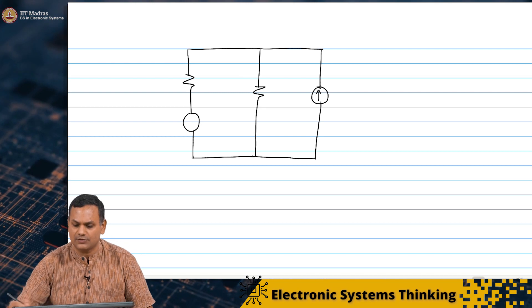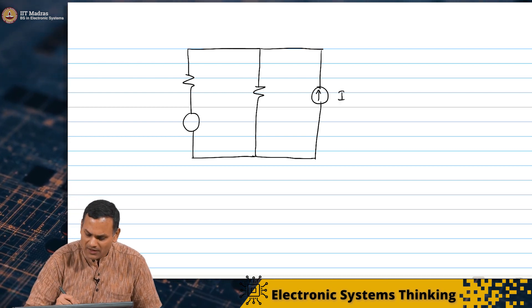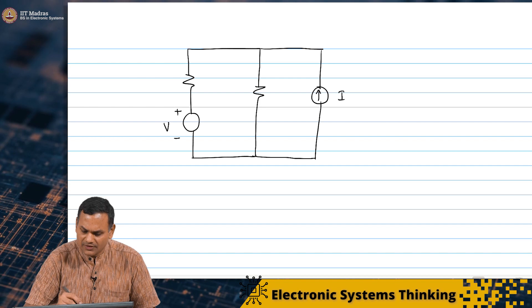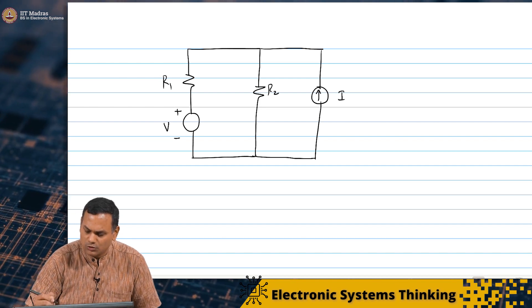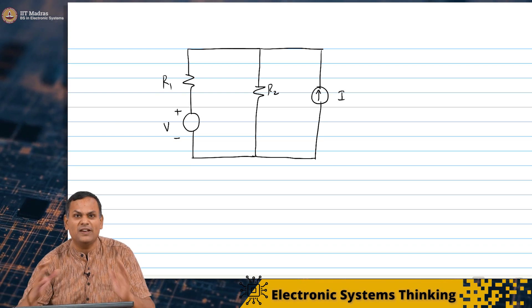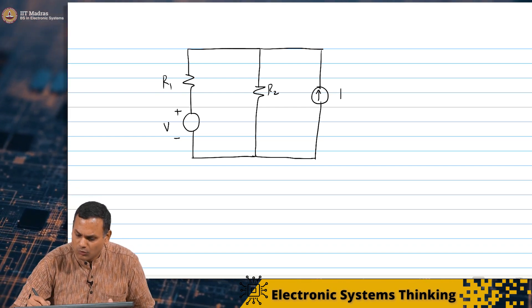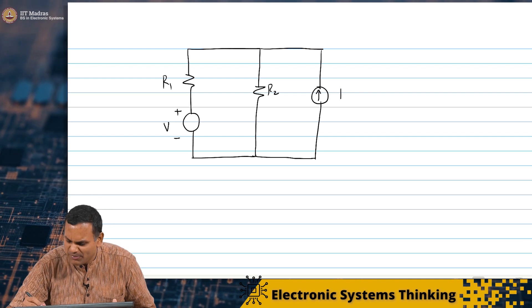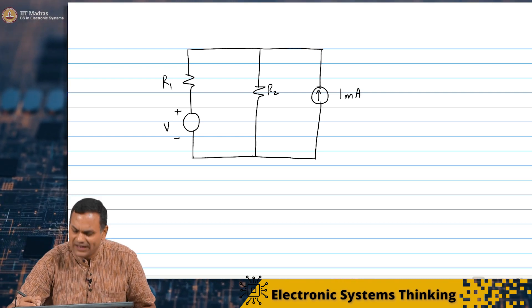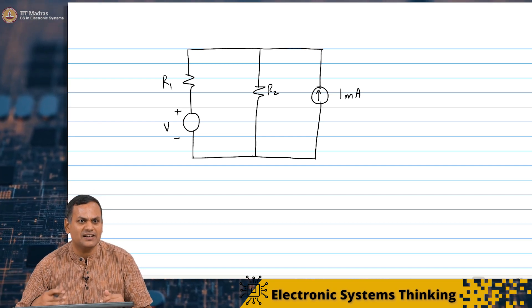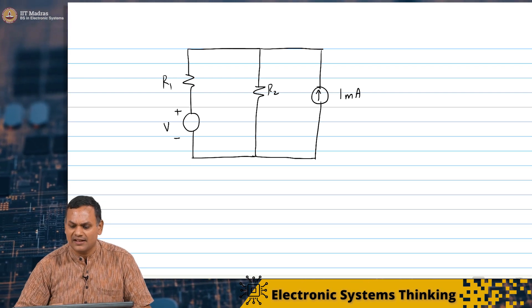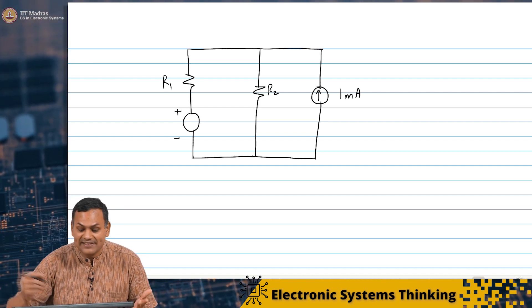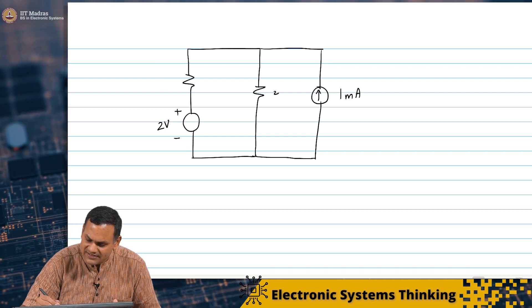I am going to say that this is a current source of value I, this is a voltage source of value V, and let us say this was R1 and R2. Now let us give numbers because that always makes things easier to understand. The current source is 1 milliamp — we use milliamperes since we studied batteries where current was drawn in milliamperes — and the voltage source value is 2 volts, with resistors in kilo ohms.